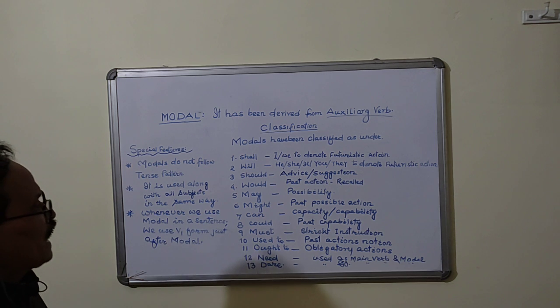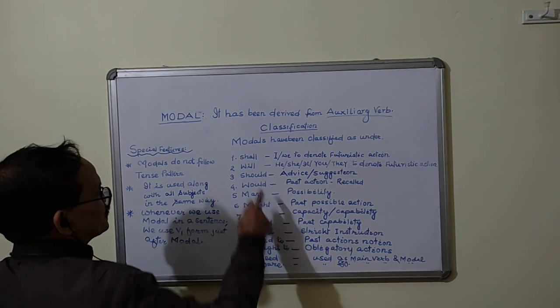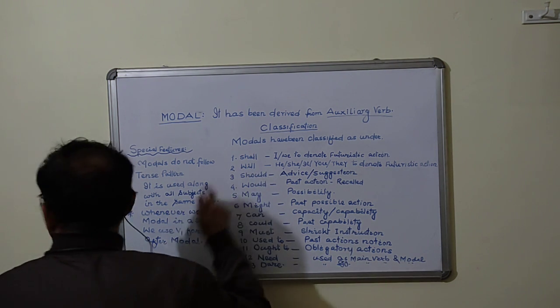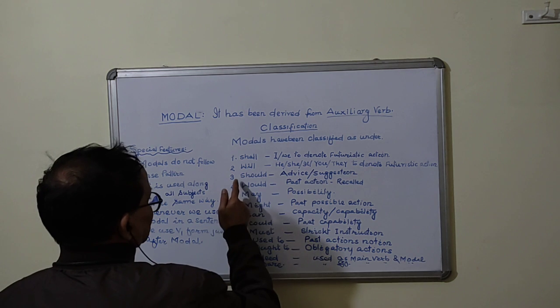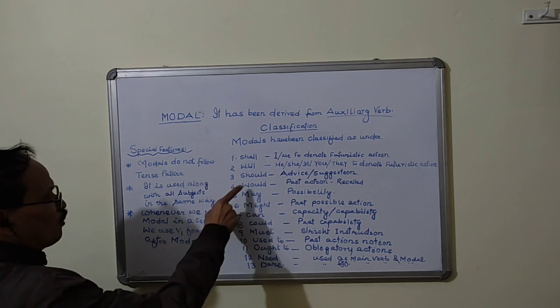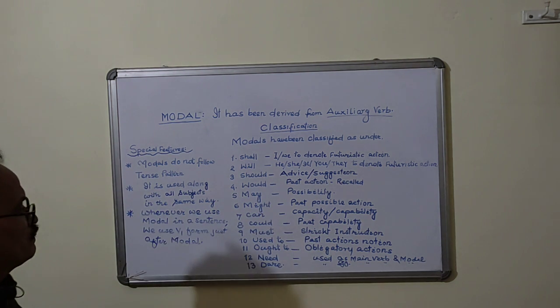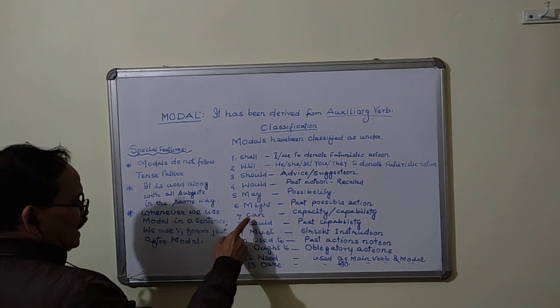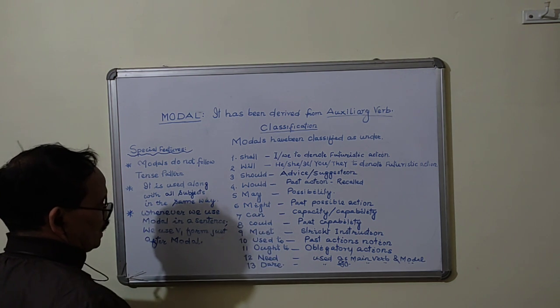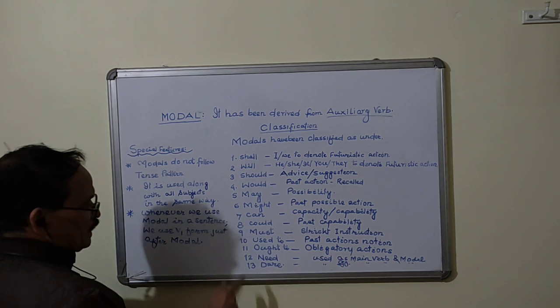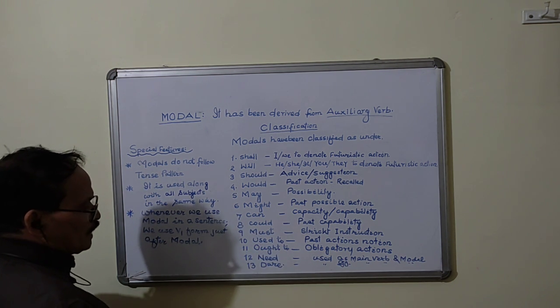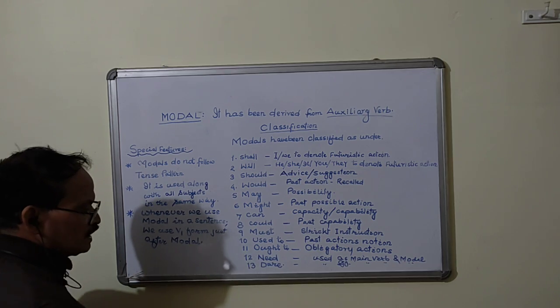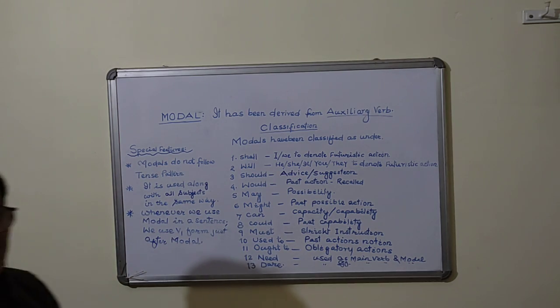Models have been classified as under: number one is shall, number two is will, number three is should, number four is would, number five is may, number six is might, number seven is can, number eight is could, number nine is must, number ten is used to, number eleven is ought to, number twelve is need and number thirteen is dare.